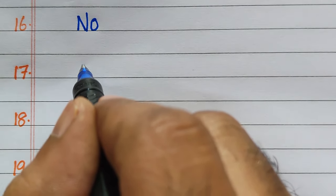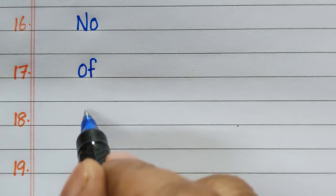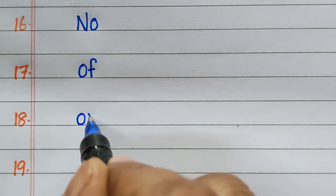Sixteenth two-letter word is NO. Seventeenth, OF. Eighteenth, ON. Nineteenth, OR.